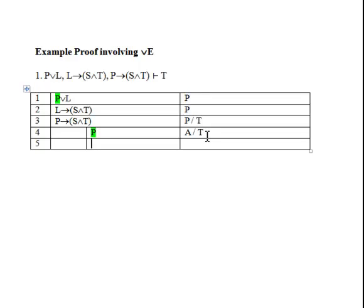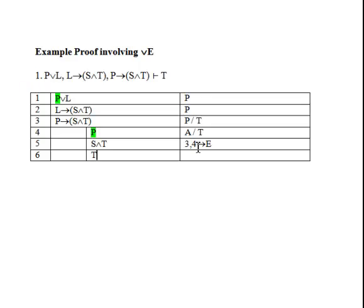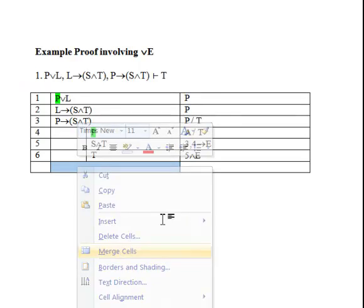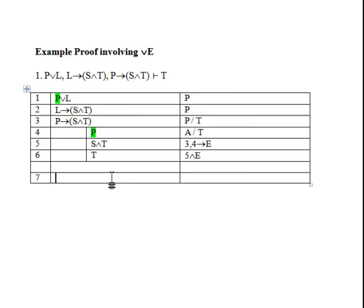So we assume P at line 4, and then we can make use of conditional elimination using lines 4 and 3, and this will give us S and T. And so let me just quickly remove the color right here. And so this is lines 3 and 4 using conditional elimination. Next we'll use conjunction elimination on line 5 to give us simply T.